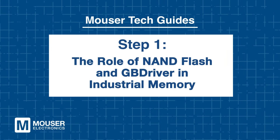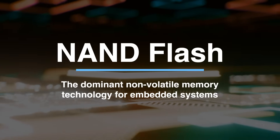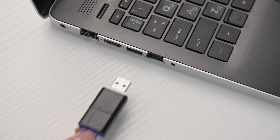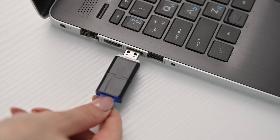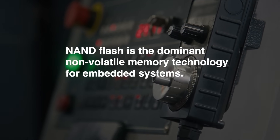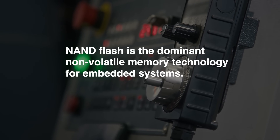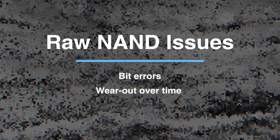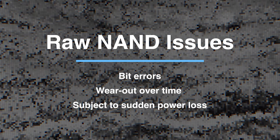Step 1: The role of NAND flash and GB driver in industrial memory. NAND flash is the dominant non-volatile memory technology for embedded systems, offering compact form factors in large capacities. That makes it perfect for space-limited, data-heavy embedded systems. However, raw NAND is inherently prone to issues such as bit errors, wear out over time, and vulnerability to sudden power loss.